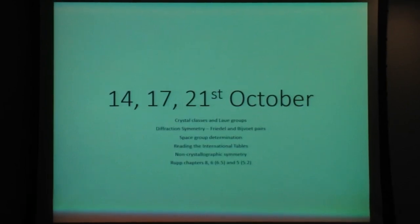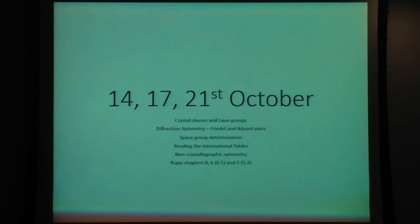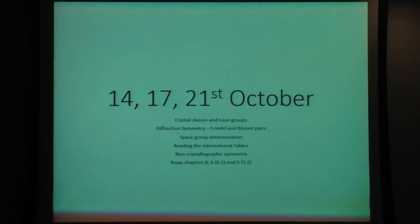So in crystallography, there's a set of four or five different books called the International Tables — A, B, C, D, E, and F. The A volume is a set of tables which define all the space groups. They tell you, if you've got a molecule, how to take that molecule and perform translation and symmetry translations on it to make a complete crystal, telling you all the positions of where things are going to be. That can be important when you're trying to interpret the diffraction data and work out what space group you've got.